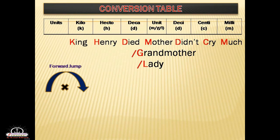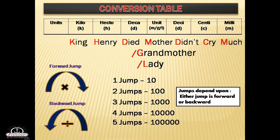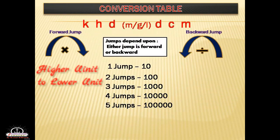There are some tricks: if you are jumping forward, it means higher unit to lower unit — you should multiply. If you are jumping backward, you should divide, because you are converting lower unit to higher unit. One jump indicates ten, two jumps indicates one hundred, three jumps indicates one thousand, four or five jumps indicates ten thousand or one lakh respectively.